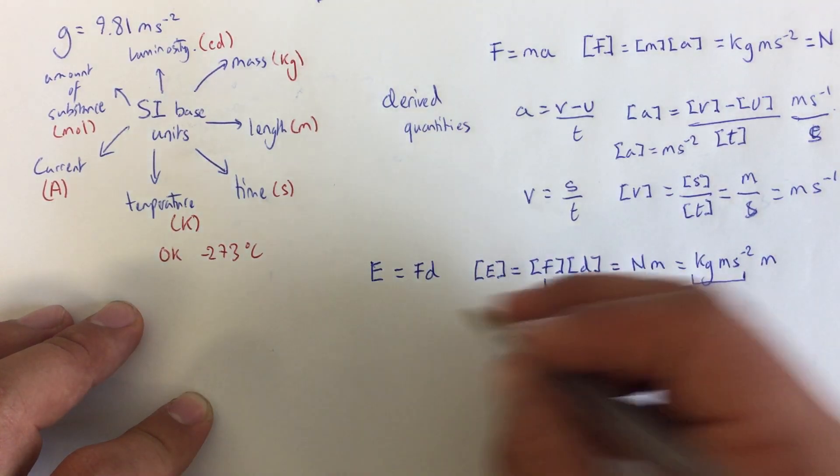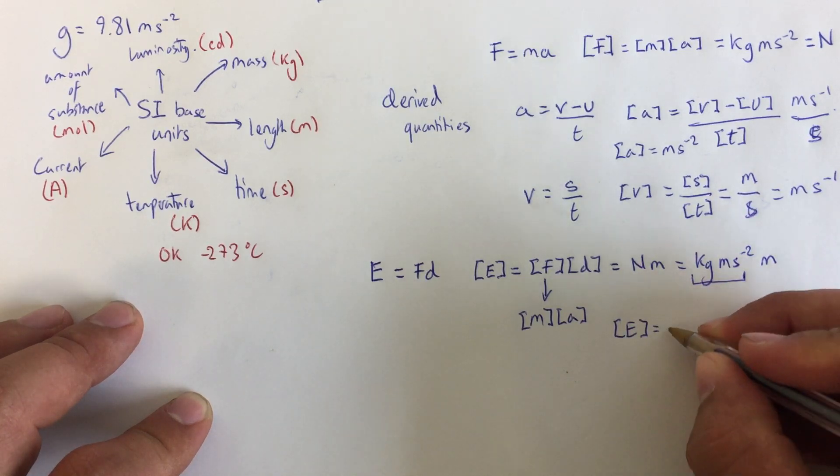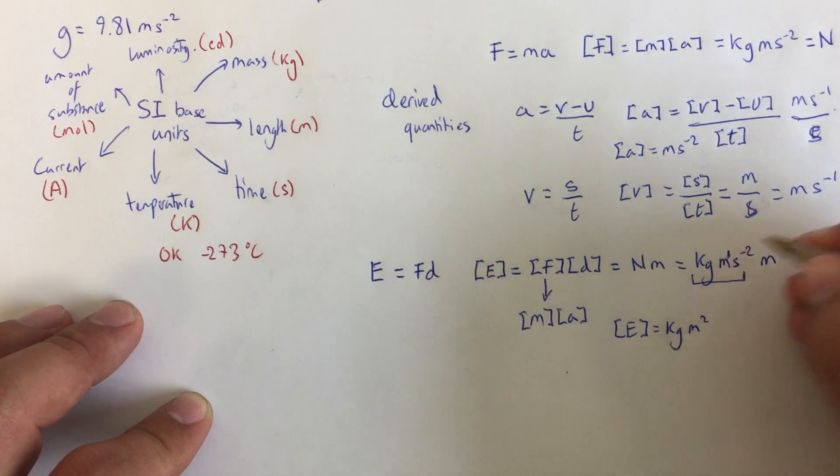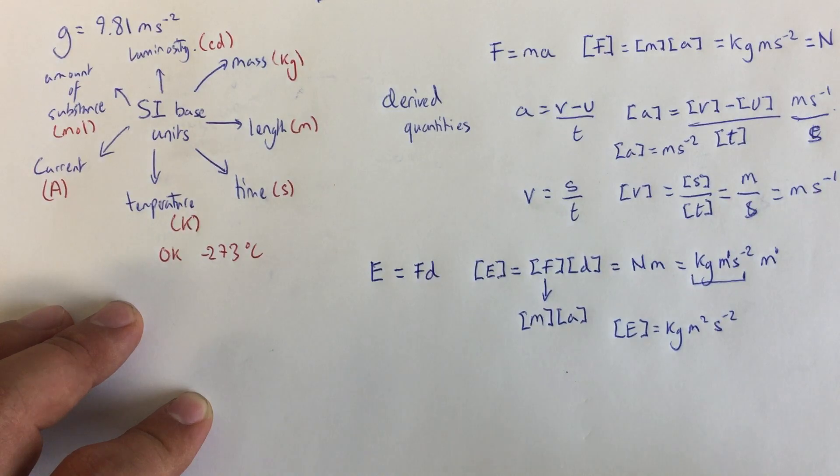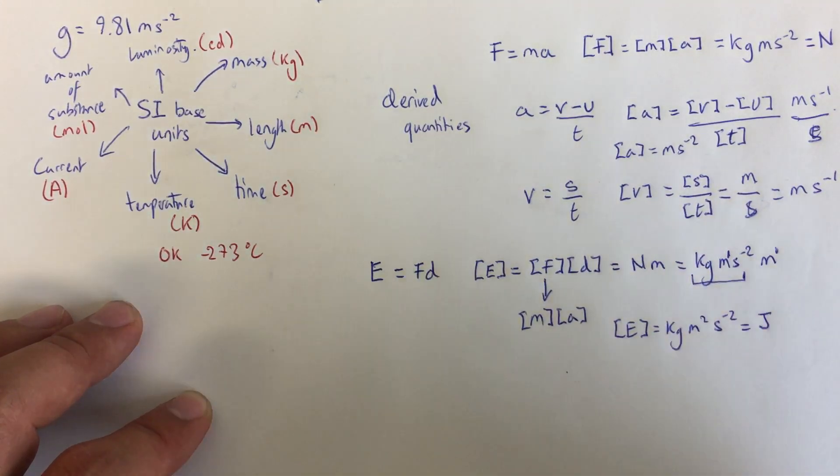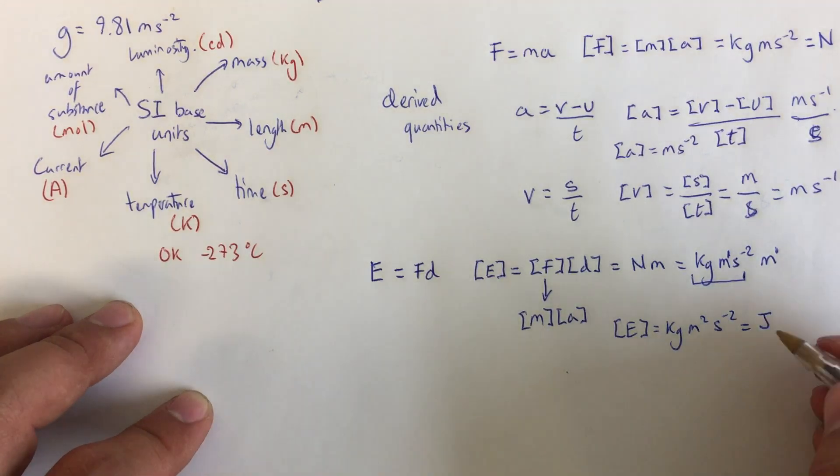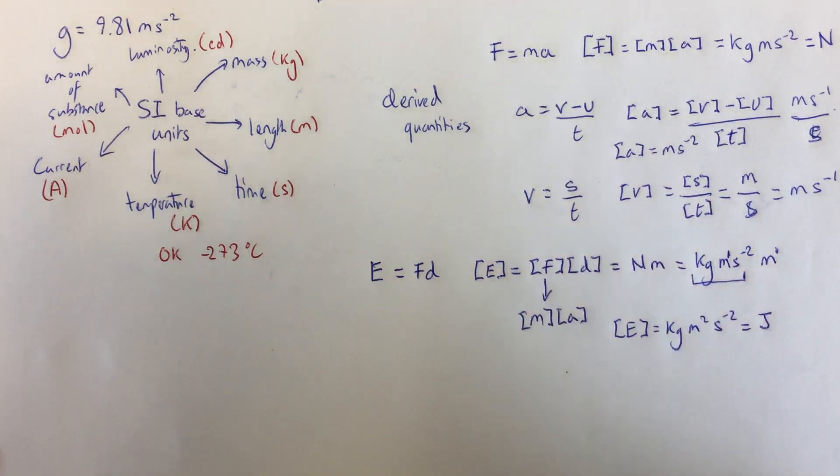So I put that together, and I get that the unit of energy, or work done, is kilogram meters squared, because that is meters to the one, and that is meters to the one, so I can put that together. Seconds to the minus two, also known as the joule. So the unit of energy is the joule, it always has been a joule, but a joule shown in SI base units is equal to this.